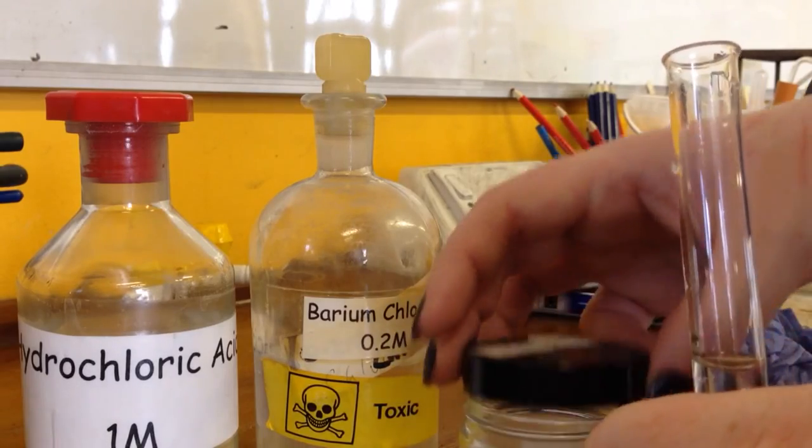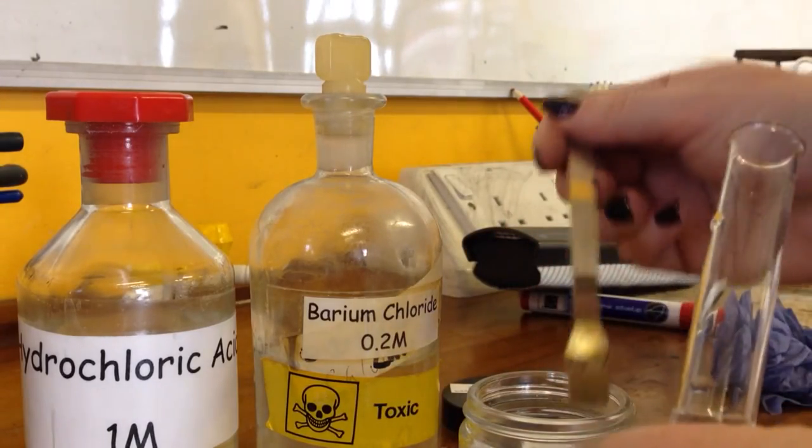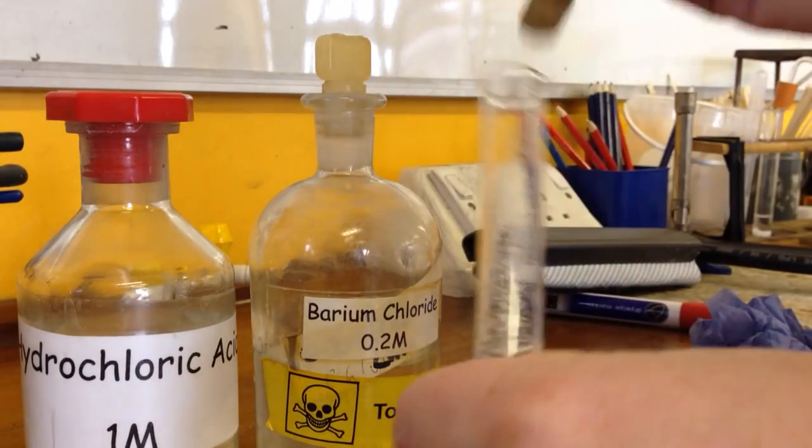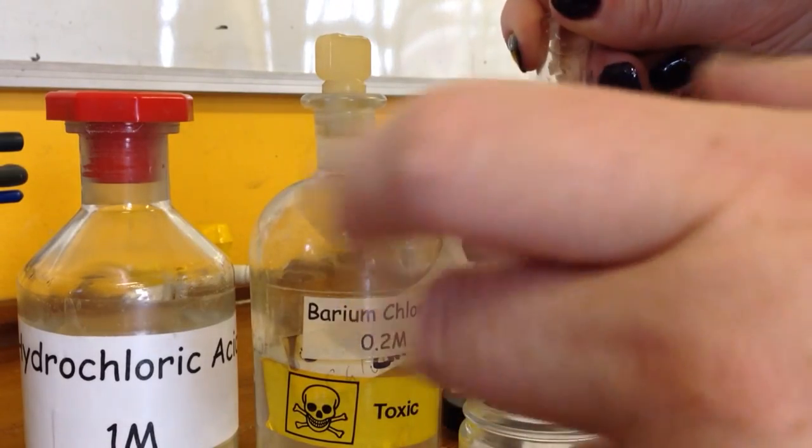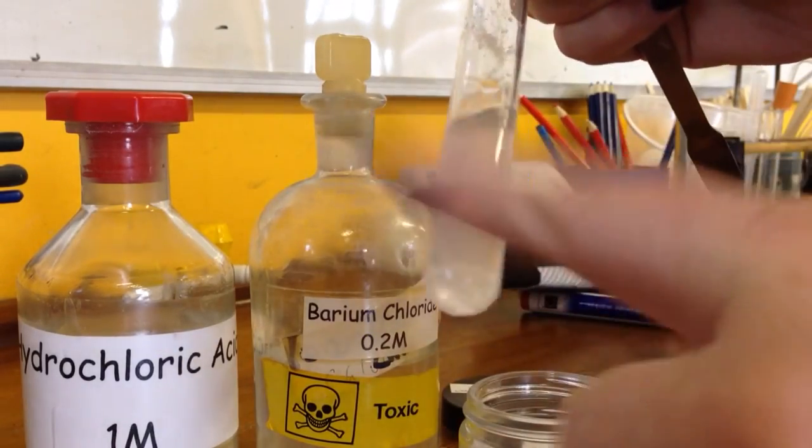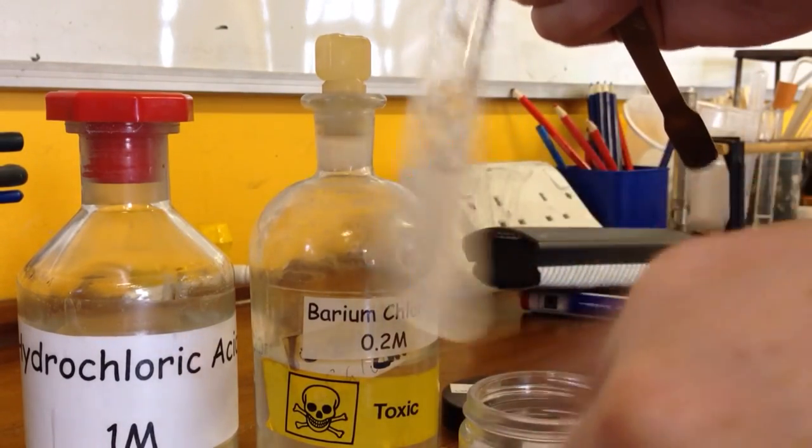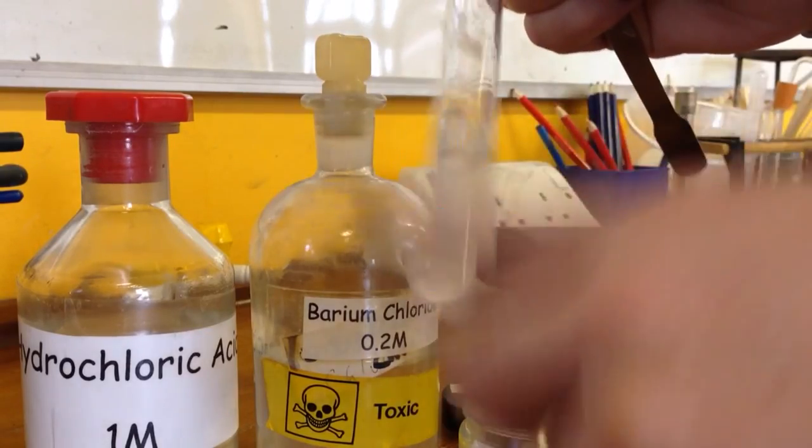I'm going to be testing to see if I have sulphate ions in. So I just need to pop a little bit of my magnesium sulphate into my water and then shake it so it's dissolved.